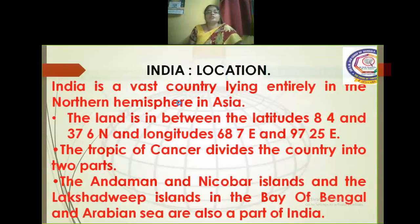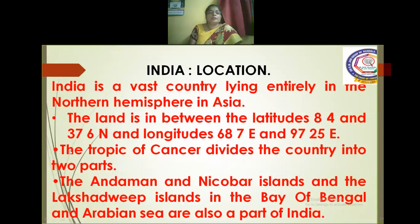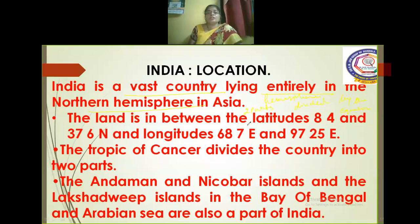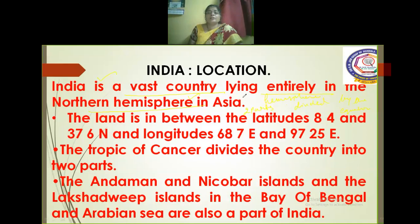India's location in the globe: India is a vast country lying entirely in the northern hemisphere. Hemisphere means the place on the earth that is divided by the equator. The equator is the latitude that divides the earth into two parts. The northern part is called the northern hemisphere and the southern part is called the southern hemisphere, and India lies in the northern hemisphere and in the continent called Asia.